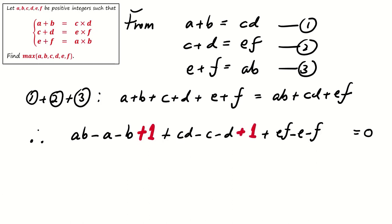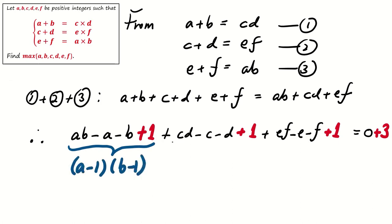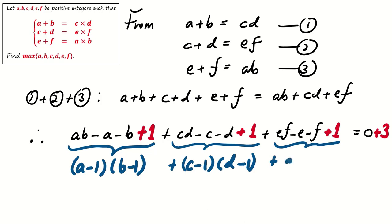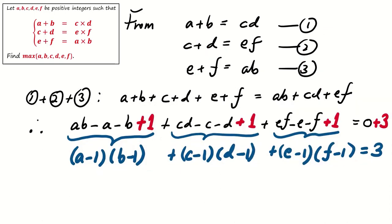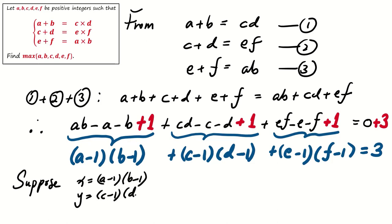Now on the left-hand side we add 1, 1, and 1, and on the right-hand side we add 3. The purpose of this is to factorize: the first four terms become (a minus 1)(b minus 1), the middle four terms become (c minus 1)(d minus 1), and the last four terms become (e minus 1)(f minus 1), equaling 3. We substitute x equals (a minus 1)(b minus 1), y equals (c minus 1)(d minus 1), z equals (e minus 1)(f minus 1), so x plus y plus z equals 3.